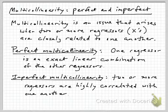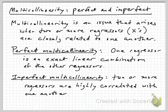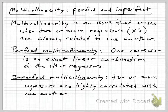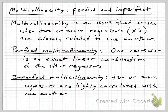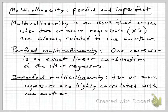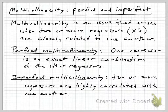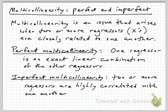Multicollinearity is a set of problems that can arise in multiple regression settings, and it has to do with when two or more of the regressors, the x variables, are closely related to one another. It really comes in two flavors: perfect multicollinearity and imperfect multicollinearity.